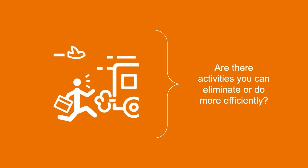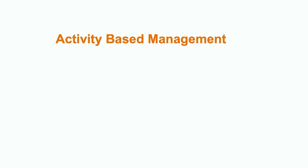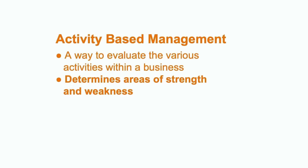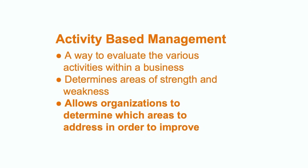Have you ever looked at a routine activity that you undertake each day and thought about whether it could be done differently? Maybe you find yourself running out the door each morning late for work. To change this, you might sit down and think about why this is happening and consider whether there are certain activities you can eliminate or do more efficiently to save yourself time each morning. Companies use activity-based management to address similar issues in their business — evaluating the various activities within a business, narrowing in on each area to determine its strengths and weaknesses, and identifying which areas need improvement.